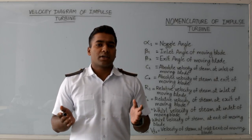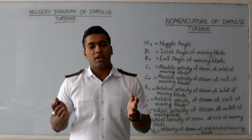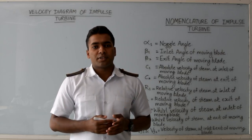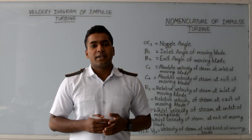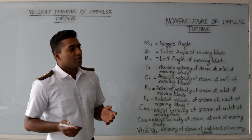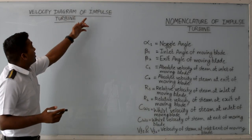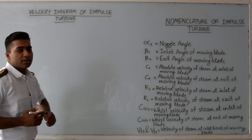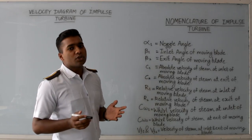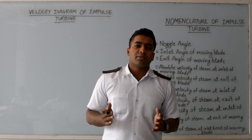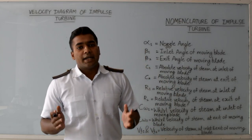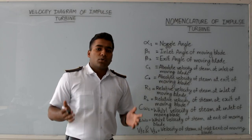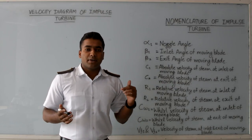If you want to understand the working, applications, and advantages of the steam turbine in great detail, you can watch my previous video. Now let us come to today's topic — the velocity diagram of the impulse turbine. The velocity diagram gives a brief idea of the velocity of fluid entering and leaving the moving blade. Let us understand the inlet and outlet velocity triangles with the help of a diagram.